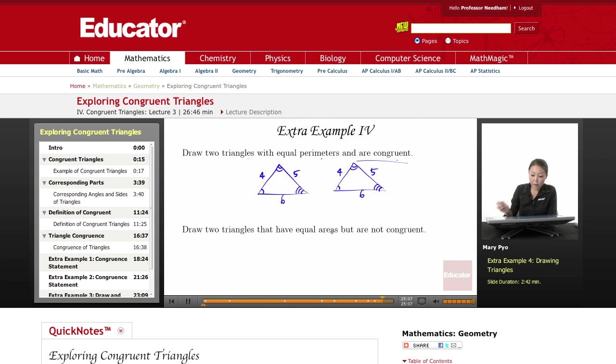Draw two triangles that have equal areas but are not congruent. So let's say I have a triangle here and say this is 8 and this is 5.